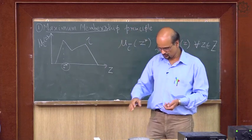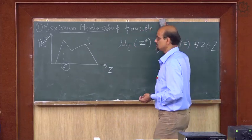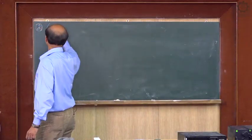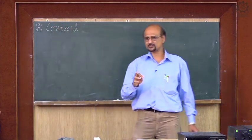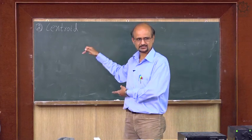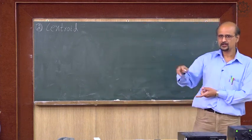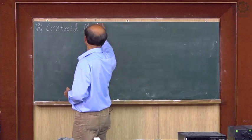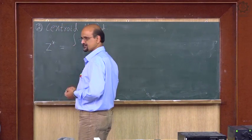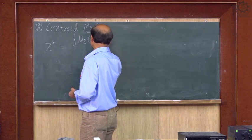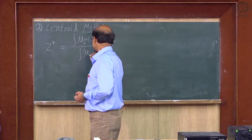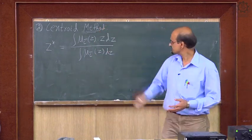We will take examples then it will be more clear. The next method is the Centroid method. Here we find z-star as: z* = ∫ μ_c̄(z) · z dz / ∫ μ_c̄(z) dz. This is the centroid type formula.